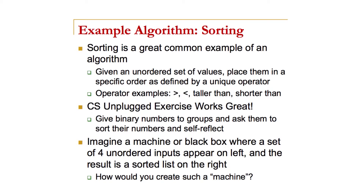There are CS Unplugged activities for sorting that work really well, and we did some of these in our face-to-face professional development. The idea is to give out binary numbers to your class, ask a few volunteers to come forward, convert those to decimal, and write the decimal on a post-it note. Then six or eight students up front sort themselves based on their number. We then ask them to reflect on what they did in order to sort, and then think about if they had to invent a machine to sort four numbers — a black box whose output is always sorted values.